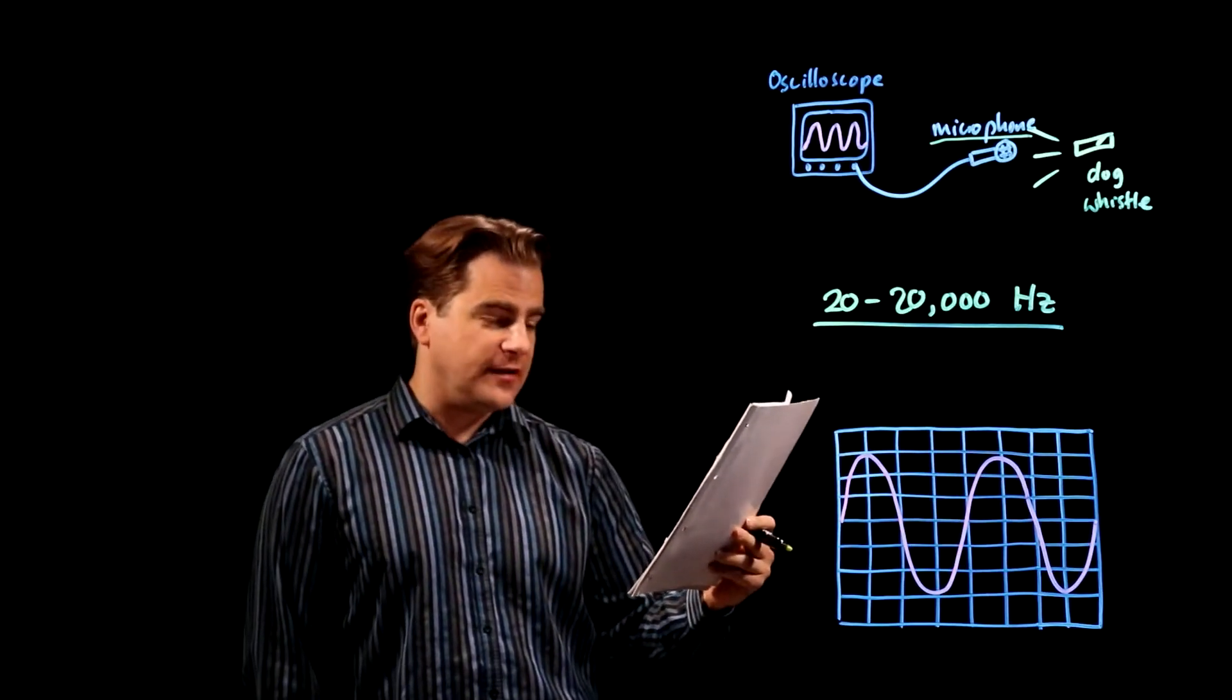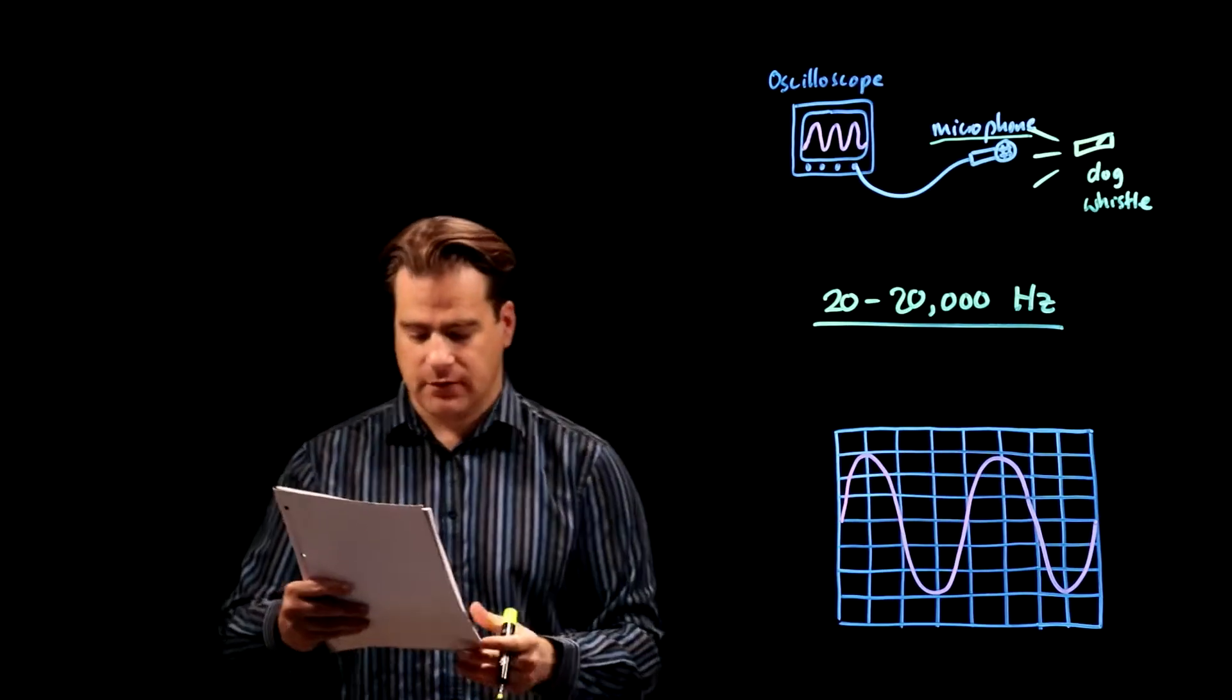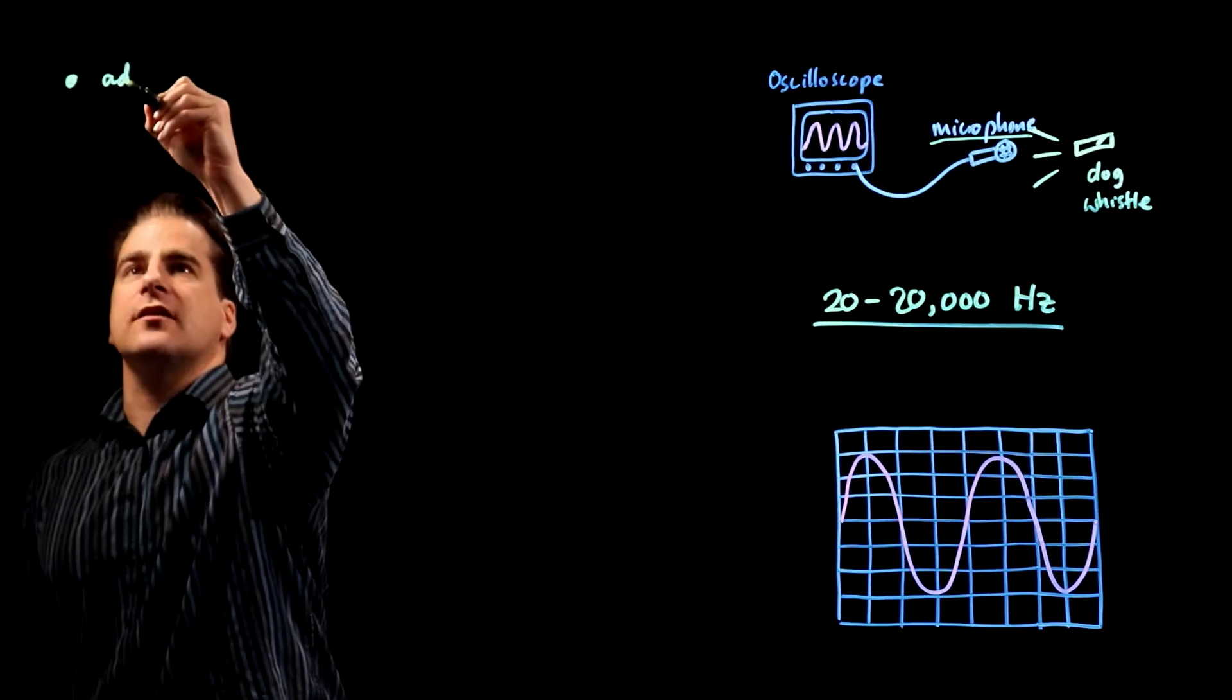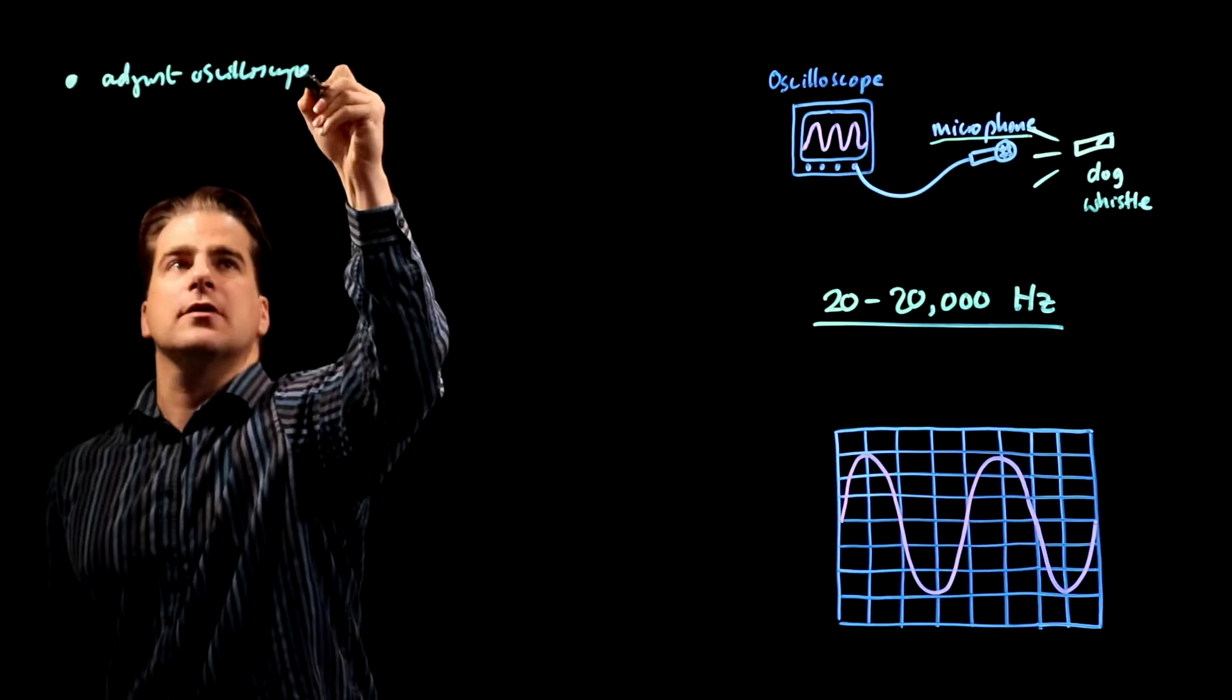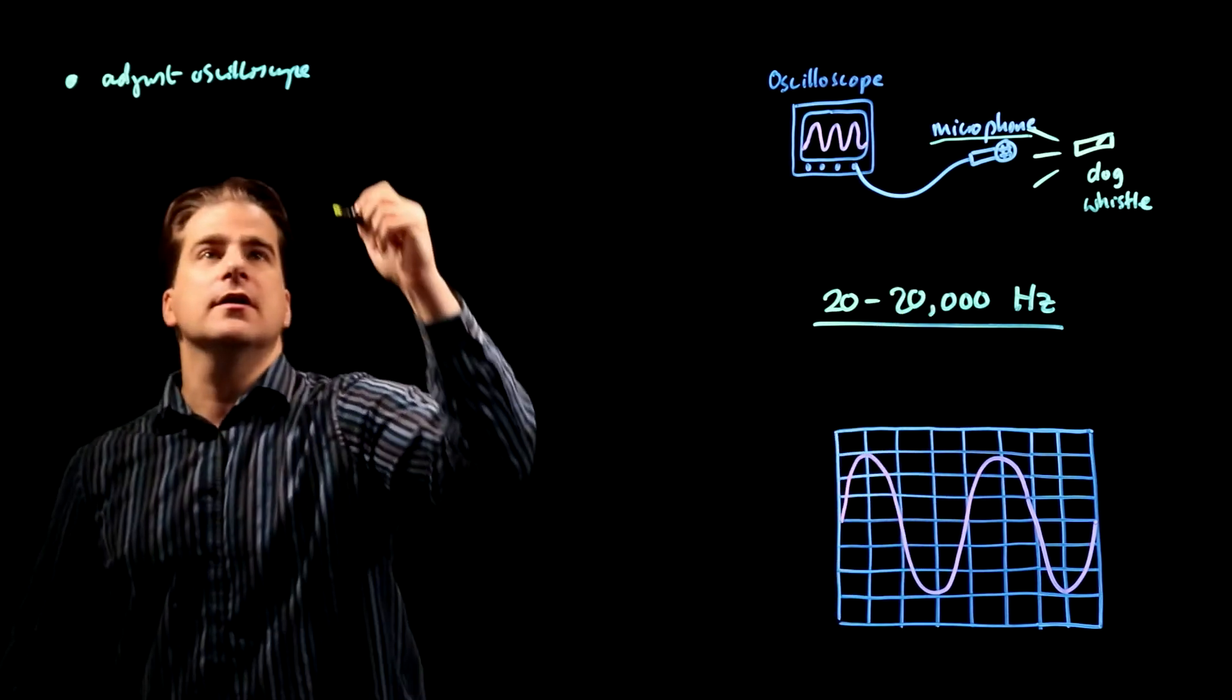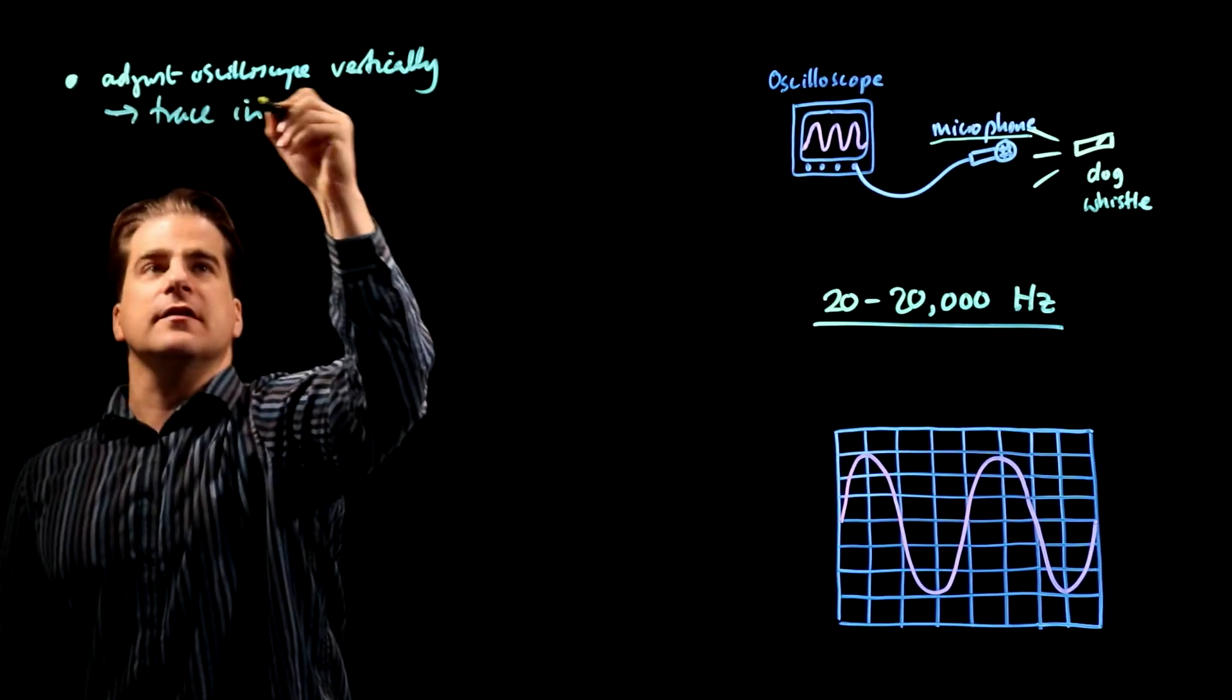Describe how a student should use the apparatus to determine the frequency of the sound. Three marks. This is what I think you should say. The first thing to do is adjust the oscilloscope to get the trace vertically in the center of the display, not too high, not too low. Adjust the oscilloscope vertically so you get the trace in the center.